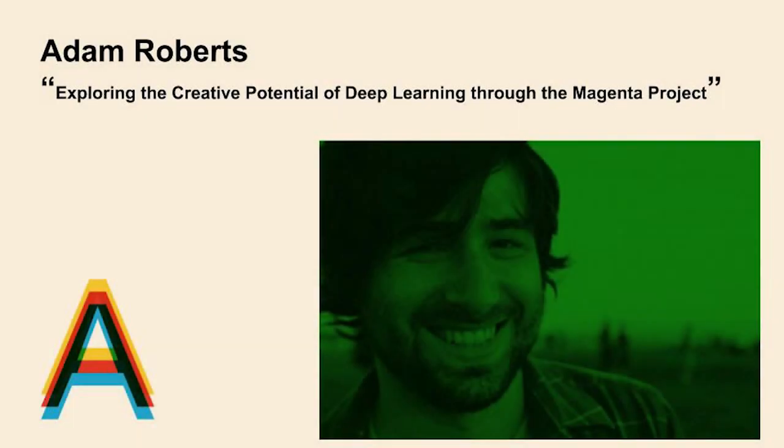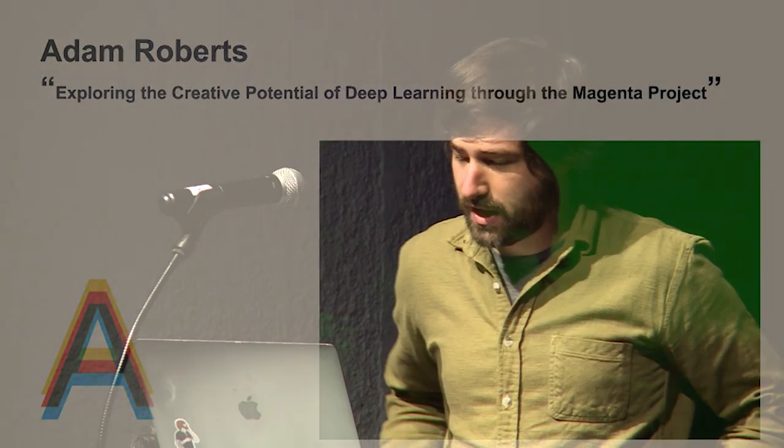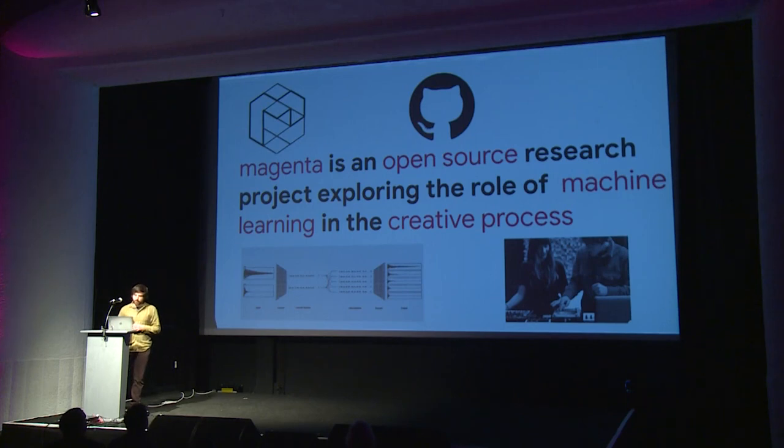Hi, I'm Adam Roberts. I work on the Magenta Project at Google as part of the Google AI team, and the title of my talk is Exploring the Creative Potential of Machine Learning Through the Magenta Project. We're a pretty small group — about five or six researchers and a few others that come and go — but we're an open source research project, so everything we do goes online pretty quickly, and we're exploring the role of machine learning in the creative process.